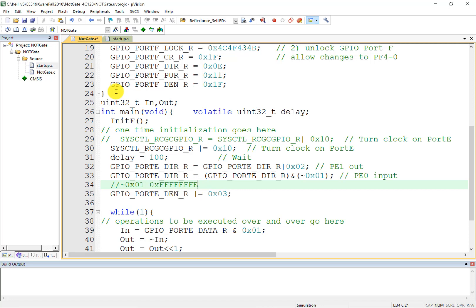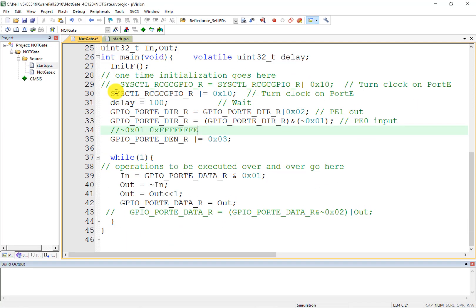And then the middle of my code is I'm going to read the variable. I read the input. I masked it with one just like I did in the assembly language version. I inverted it, I shifted it, and I output it.